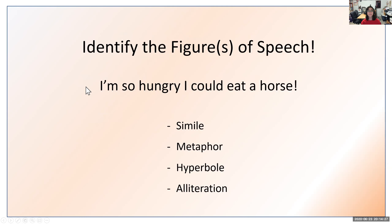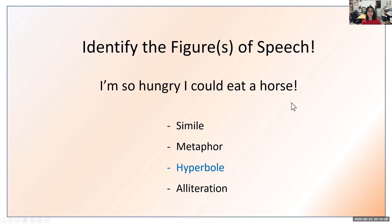Let's try another one: 'I'm so hungry I could eat a horse.' Is this a simile, metaphor, hyperbole, or alliteration? If you said hyperbole, you are correct. It's an exaggerated statement — saying you could eat a horse is exaggerated because you can't literally eat a horse since it's so large. It's just a figure of speech, an exaggeration, which is why it's labeled as hyperbole.